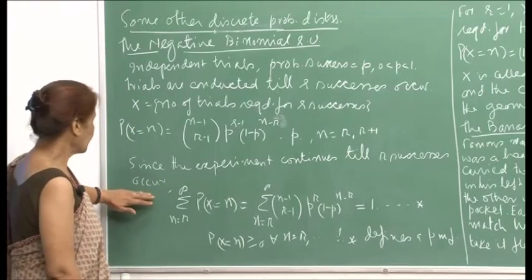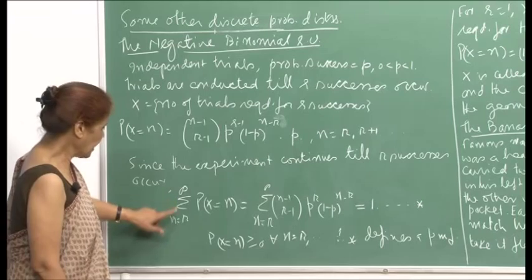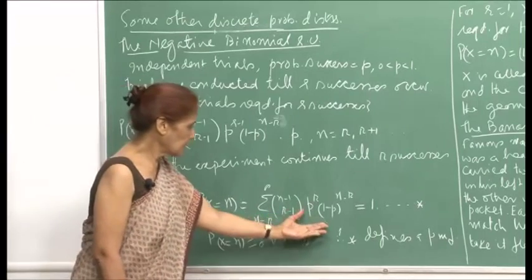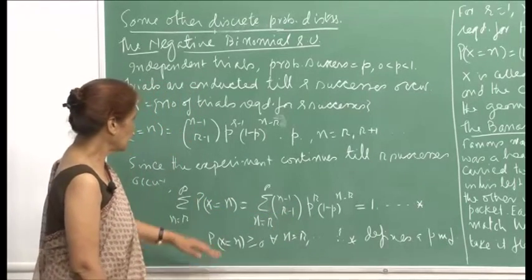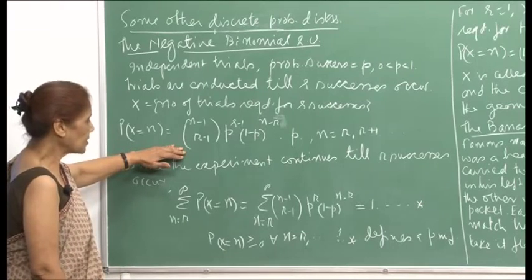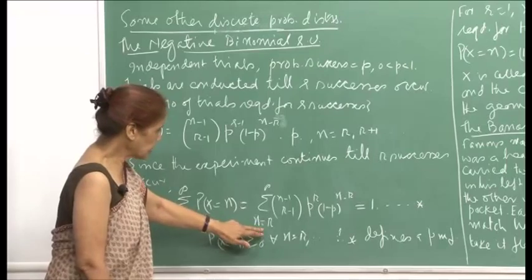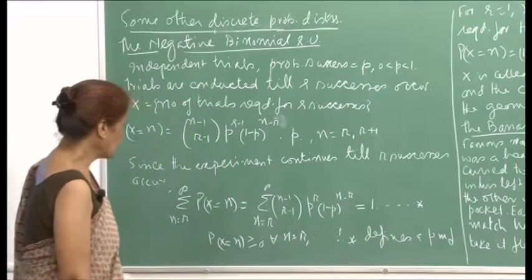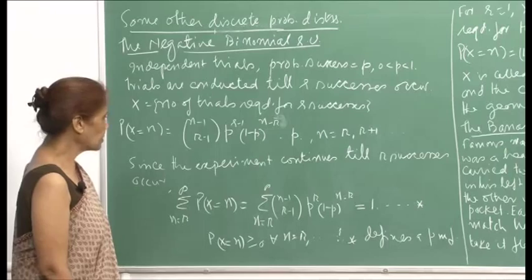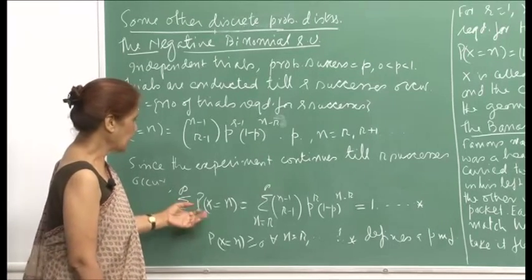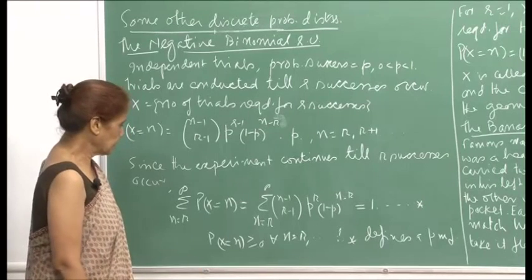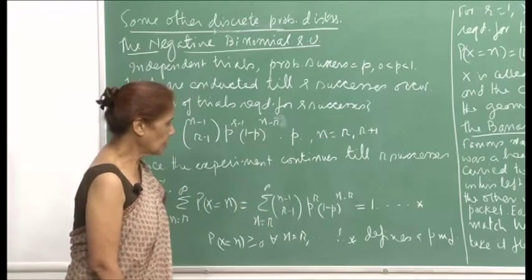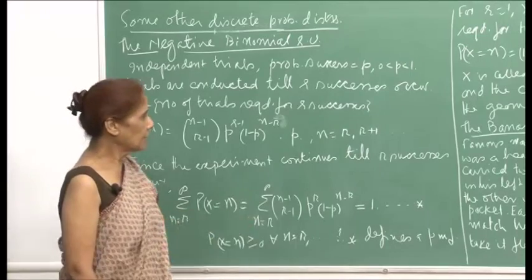Since the experiment continues till r successes occur, when you add up from n equals r to infinity, the probability x equals n must add up to 1. This is a combinatorial argument to say that what we have defined here is a probability mass function. Analytically also one can show that this sum will equal 1, but that requires more mathematics. Since probability x equals n is non-negative for n varying from r, r plus 1, and so on, this defines a valid PMF.